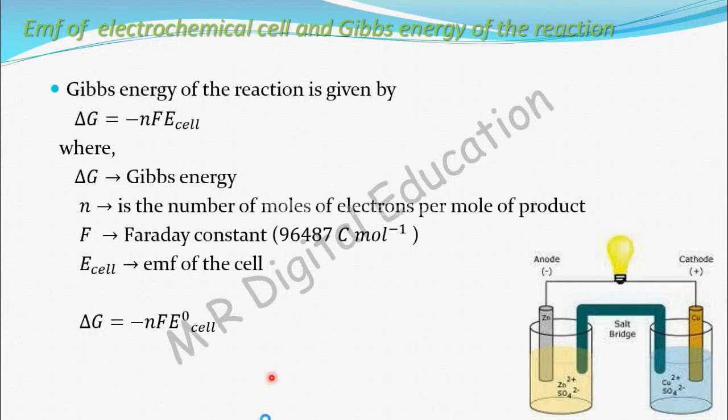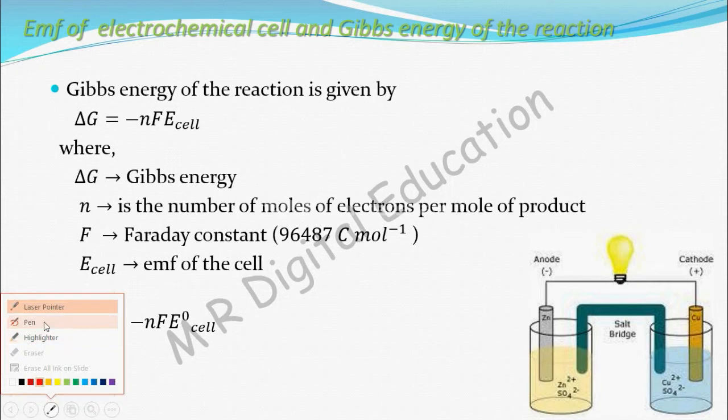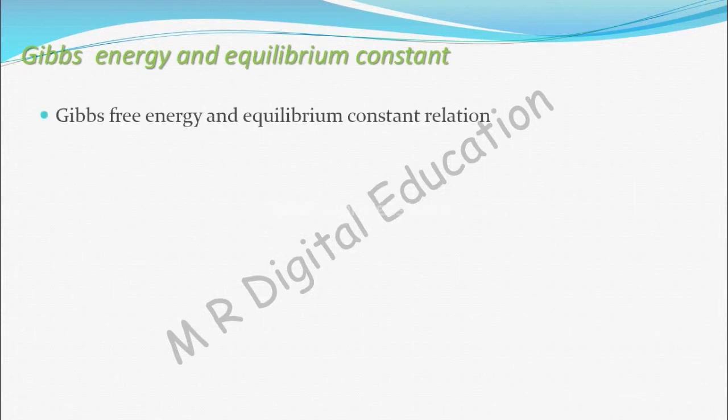Let's see now, what is the relation between equilibrium constant and Gibbs energy. Gibbs free energy and equilibrium constant relation. You know this: delta G naught equals minus RT ln K, that is logarithm of K, the equilibrium constant.